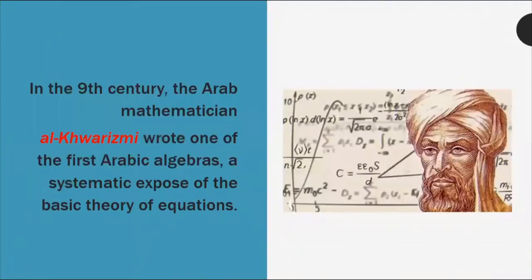In the 9th century, the Arab mathematician Al-Khwarizmi wrote one of the first Arabic algebras — a systematic exposition of the basic theory of equations. In the manuscript of Al-Khwarizmi, there is a basic theory of equations and proofs are included — very evident. And it was during the time of Al-Khwarizmi that the word 'algebra' was first used.